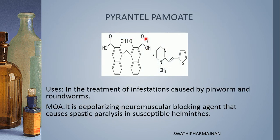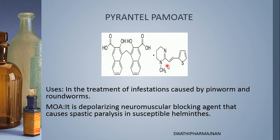The next class of other heterocyclic compounds is pyrantel pamoate. The pyrantel structure contains a thiophene ring and a pyrimidine ring, both combined with a CH=CH ethene bridge. So the ethene bridge is attached between thiophene and pyrimidine, and one methyl group is also present.